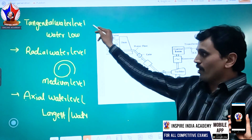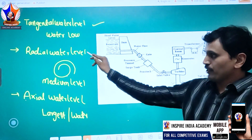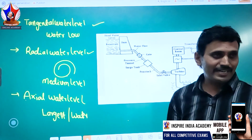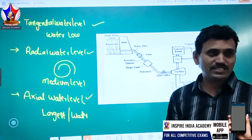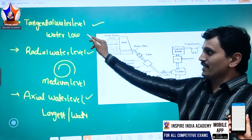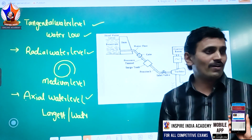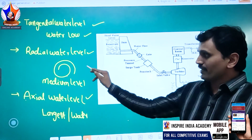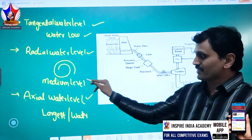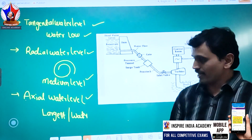Number 1: Tangential. Number 2: Radial. Number 3: Axial. You have to learn low water levels, then you have to learn low and lower water levels. Then you have to learn the largest water level.